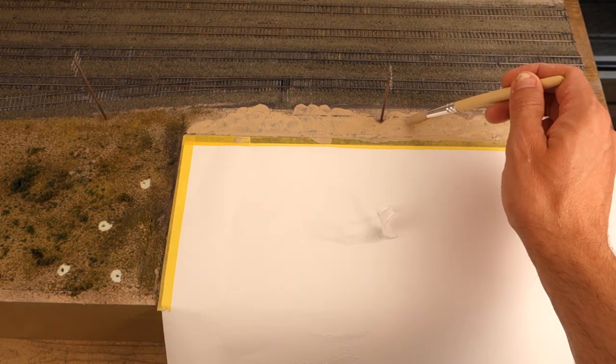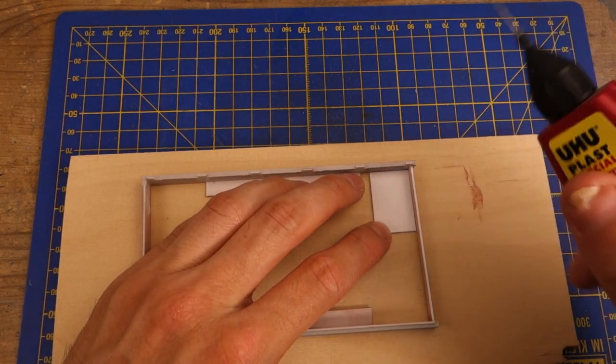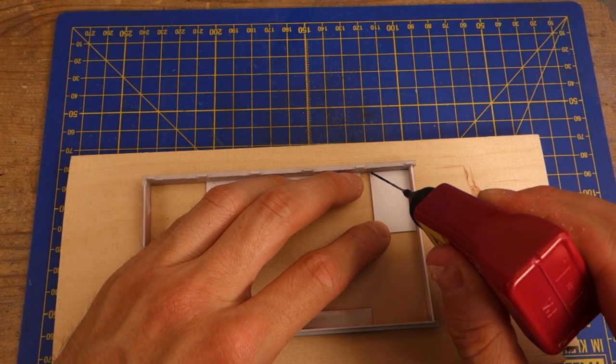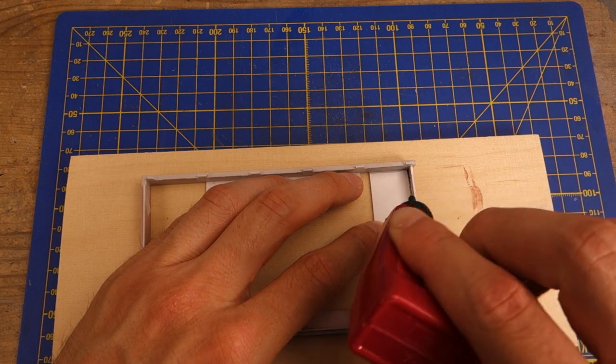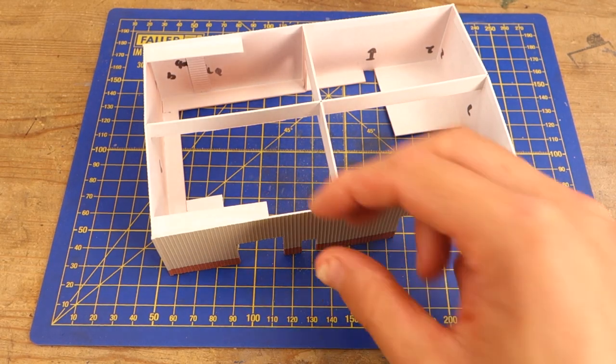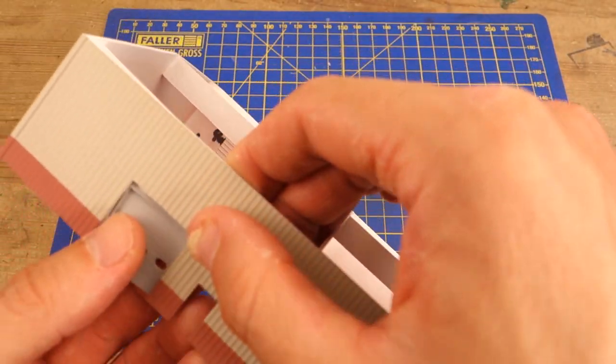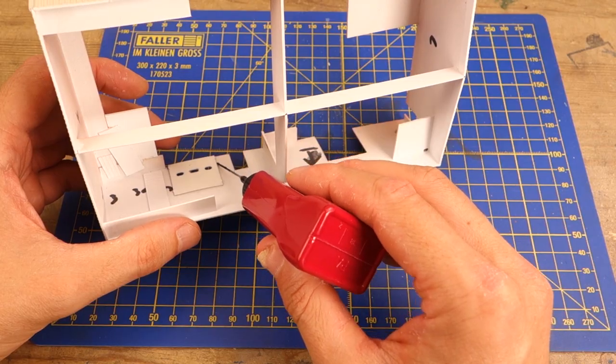Before finally gluing the structure parts, I decided I'd need more support for the building, so I've added an additional mounting plate to both parts of the structure. Now it was time to start assembling the structures. I glued the doors in place, but left the roof off for the moment.